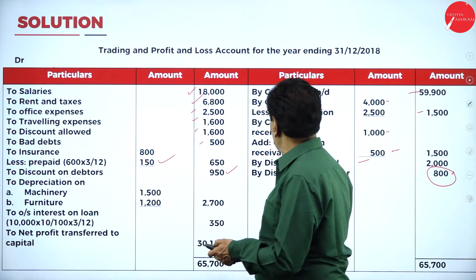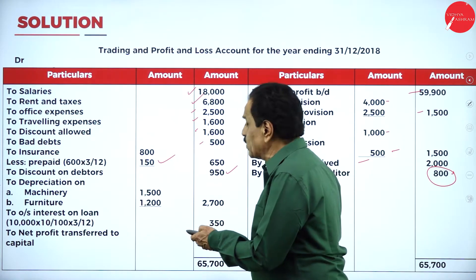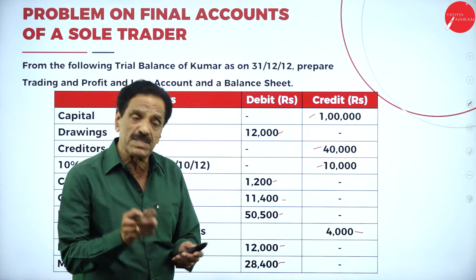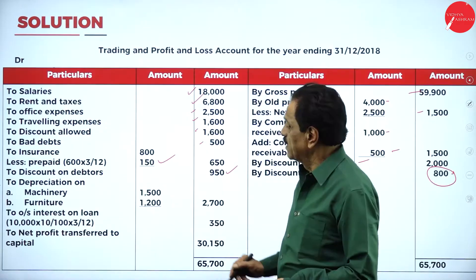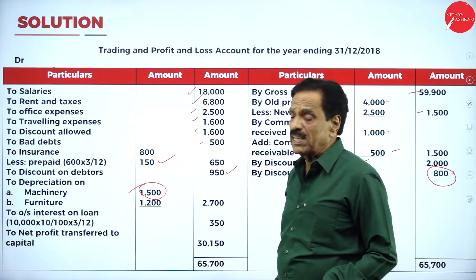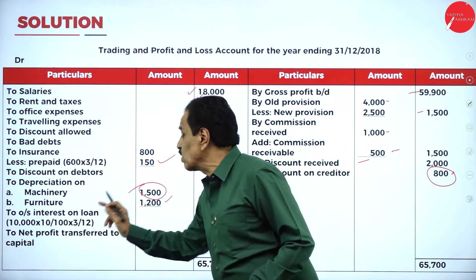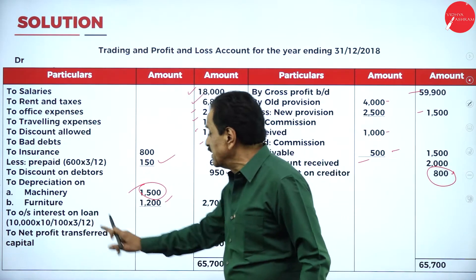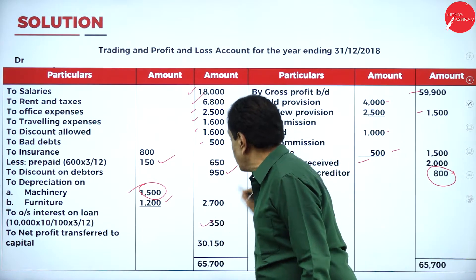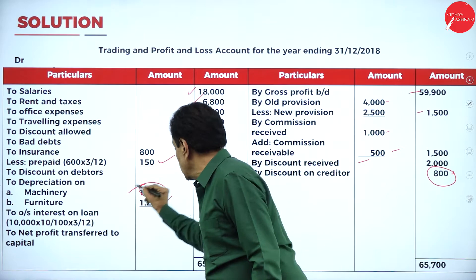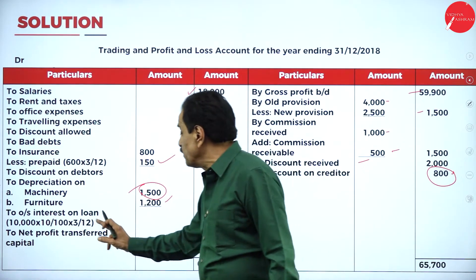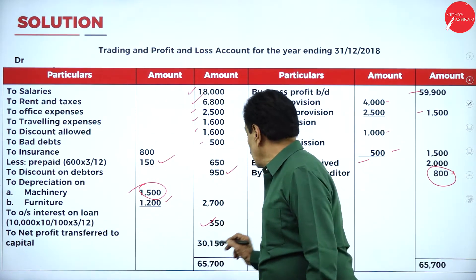Depreciation on machinery: machinery value is 28,400; add erection charges 1,600 = 30,000; depreciation at 5% = 1,500. Depreciation on furniture: 1,500. Interest on loan: we took a loan of 10,000 at 10% on 1st October; year ends 31st December — that is 3 months. Interest = 10,000 × 10/100 × 3/12 = 250.